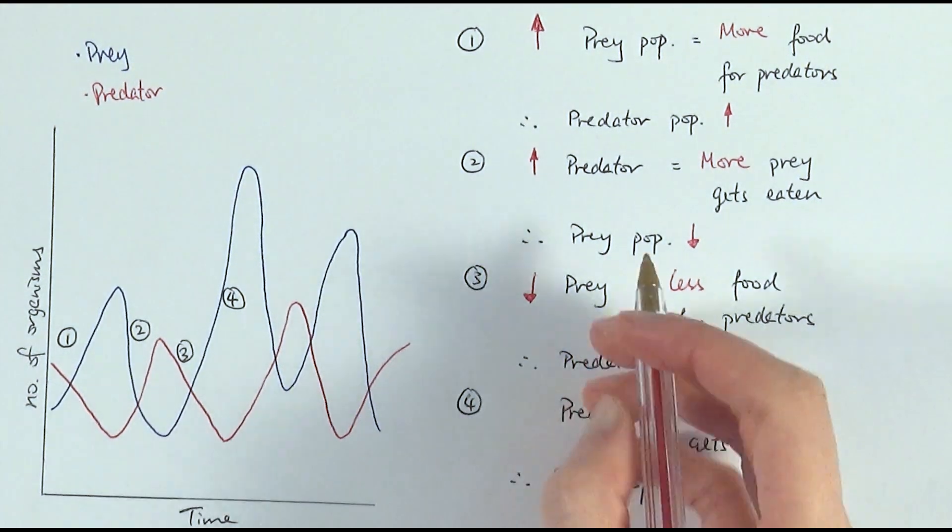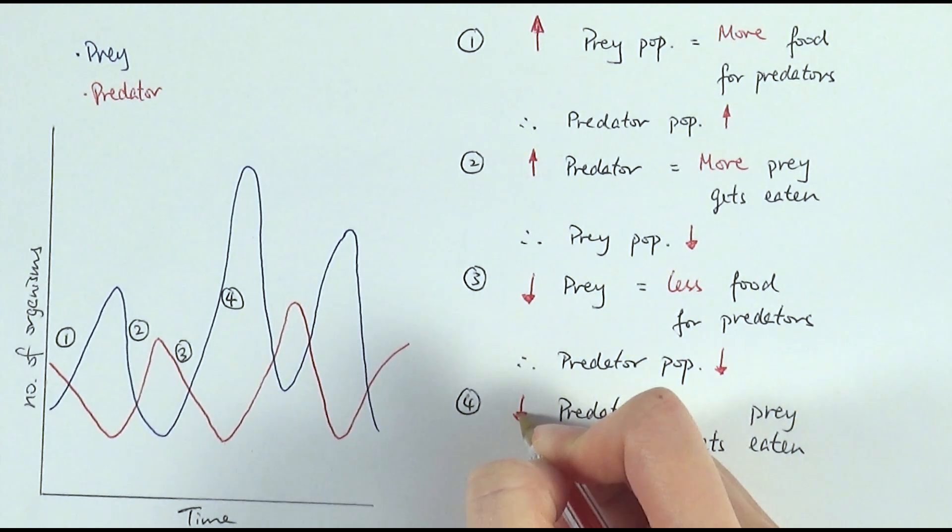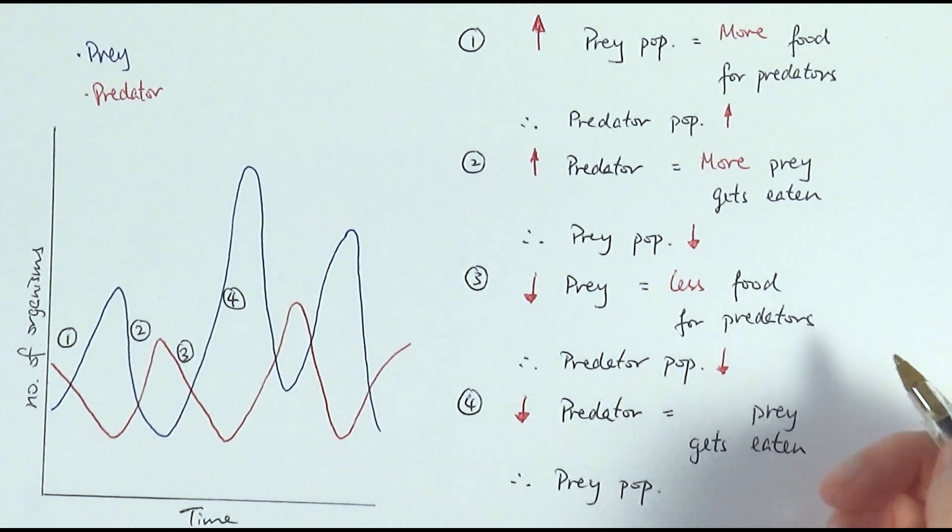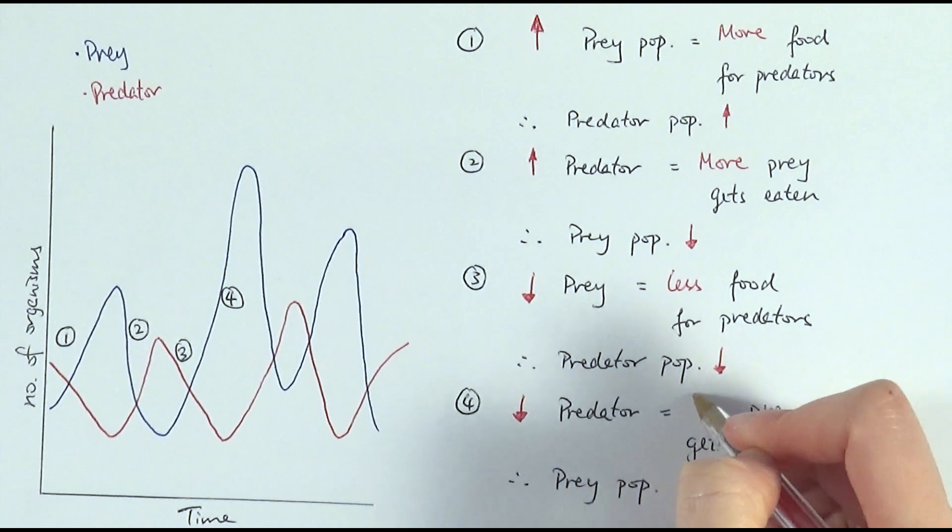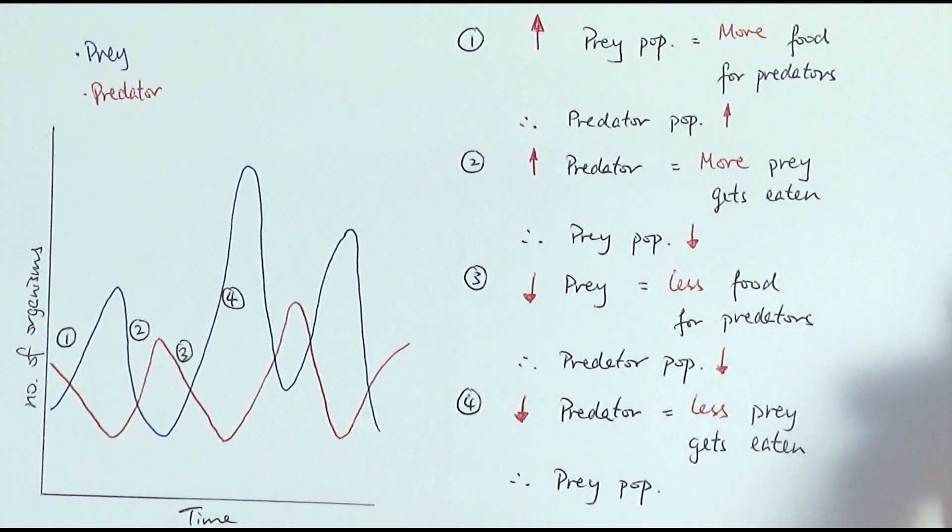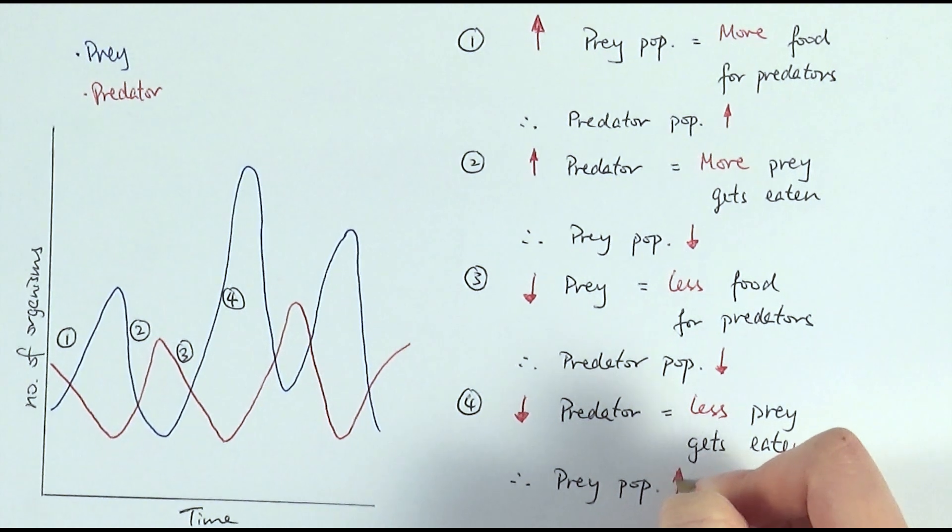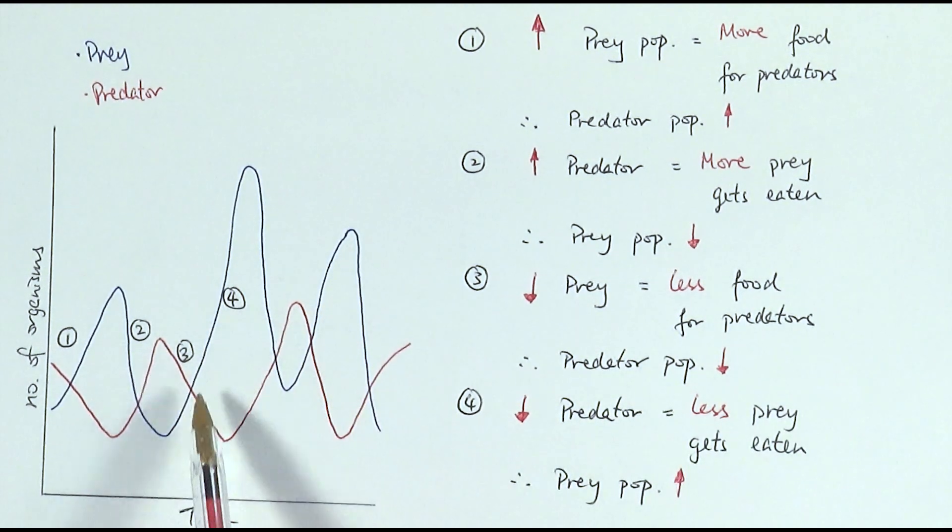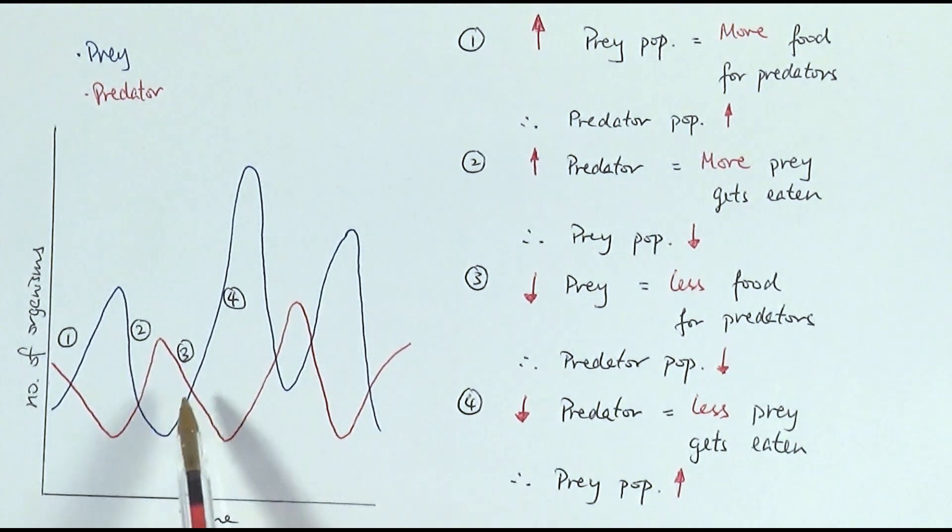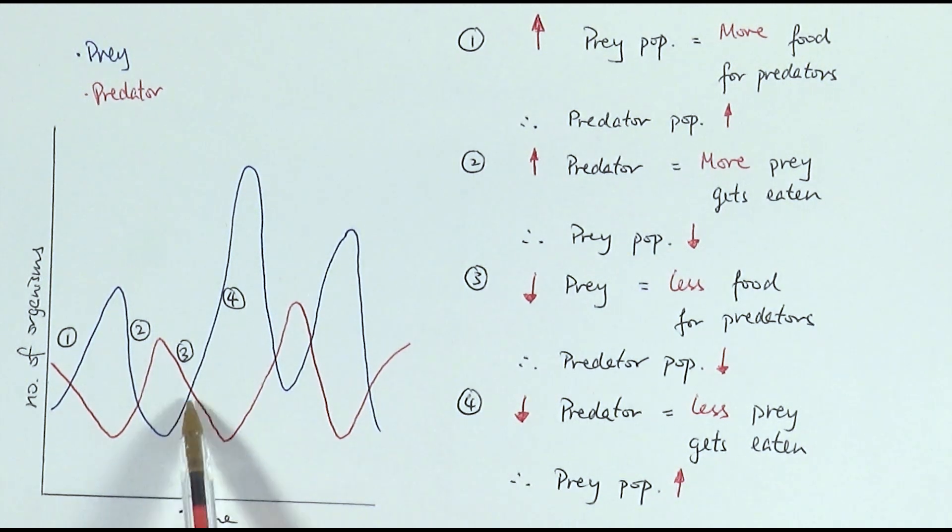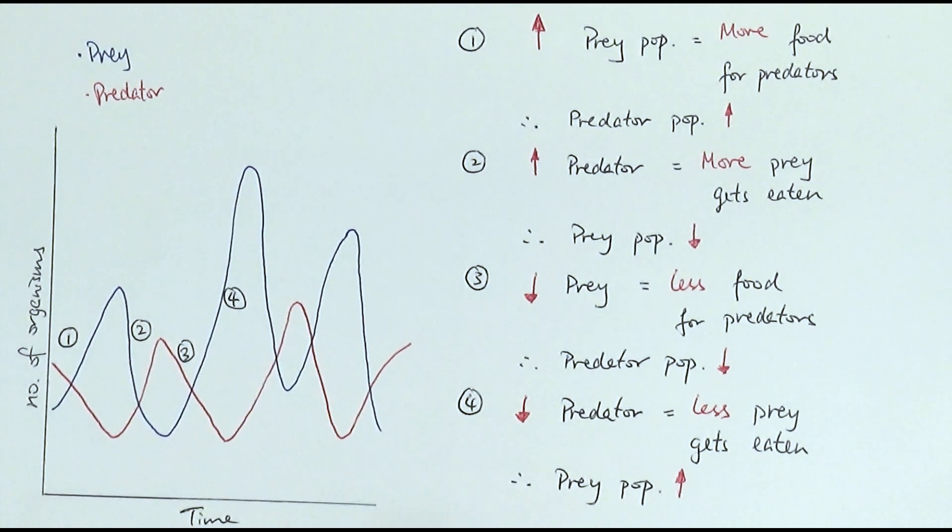And then finally, the last point, because there are less predators there hunting them, so therefore less prey gets eaten, therefore the prey population would increase once more, as shown in stage four. As prey predator population decrease, less prey gets eaten, the prey population can increase massively again.